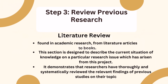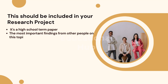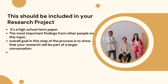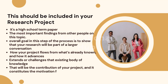Step 3: Review previous research. A section called a literature review is often found in academic research, from literature articles to books. This section is designed to describe the current state of knowledge on a particular research issue and demonstrates that researchers have thoroughly and systematically reviewed the relevant findings of previous studies on their topic, and that they have something novel to contribute. Something like this should be included in your research project, even if it's a high school term paper. In your research process, you'll want to put together a minimum of half a dozen bullet points highlighting the most important findings from others on this topic. Your overall goal is to show that your research will be part of a larger conversation — how your project flows from what's already known, and how it advances, extends, or challenges that existing body of knowledge. That will be the contribution of your project and constitutes the motivation for your research.